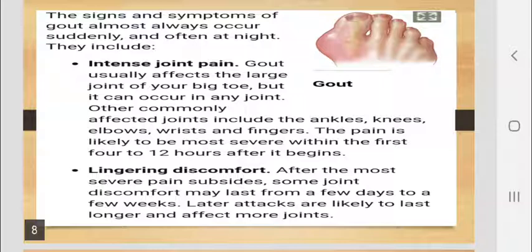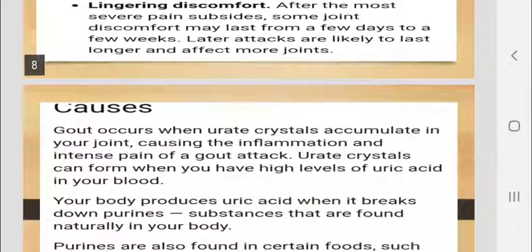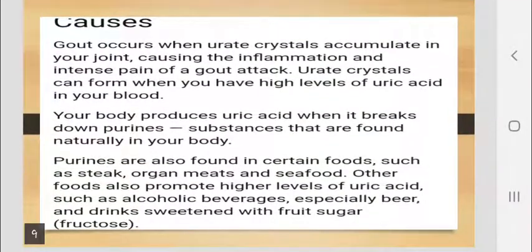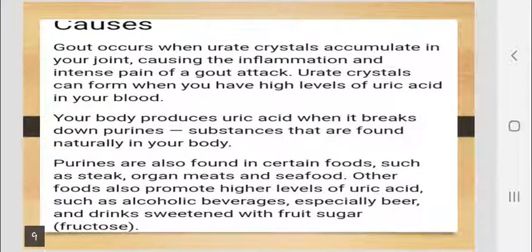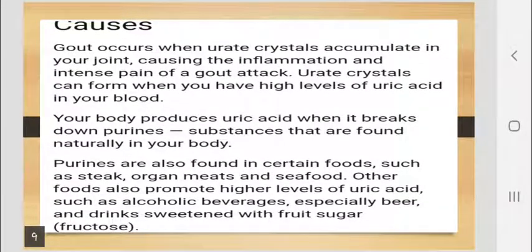Later attacks are likely to last longer and affect more joints. Gout occurs when urate crystals accumulate in your joint, causing inflammation and intense pain. Urate crystals can form when you have high levels of uric acid in your blood. Your body produces uric acid when it breaks down purines — substances found naturally in your body and also in certain foods such as steak, organ meat, and seafood. Other foods that promote higher levels of uric acid include alcoholic beverages, especially beer, and drinks sweetened with fruit sugar.